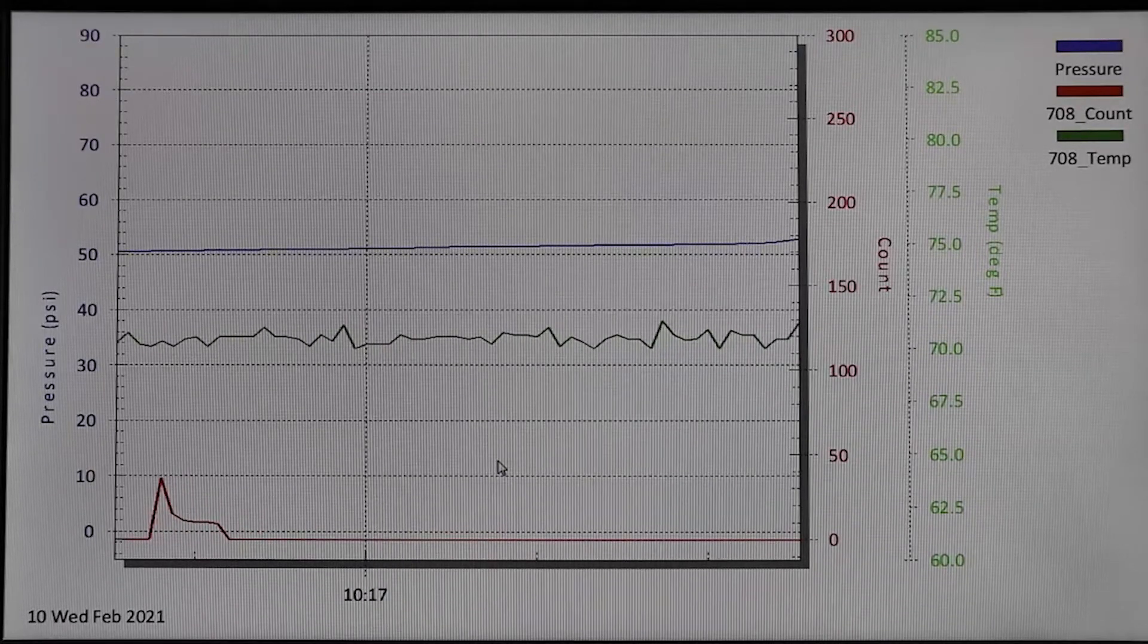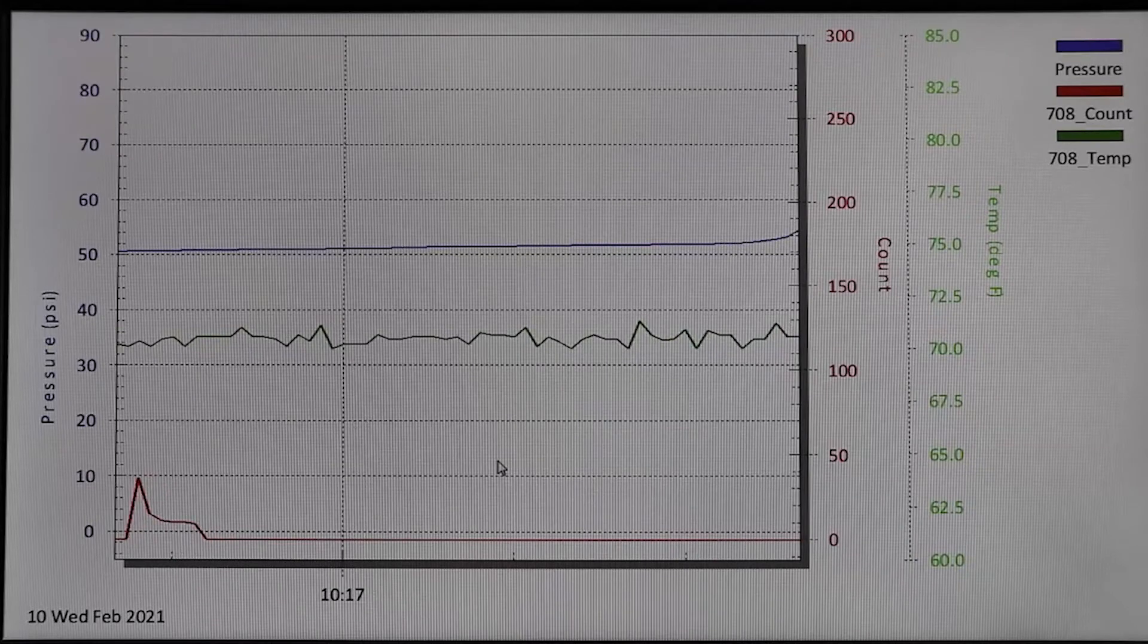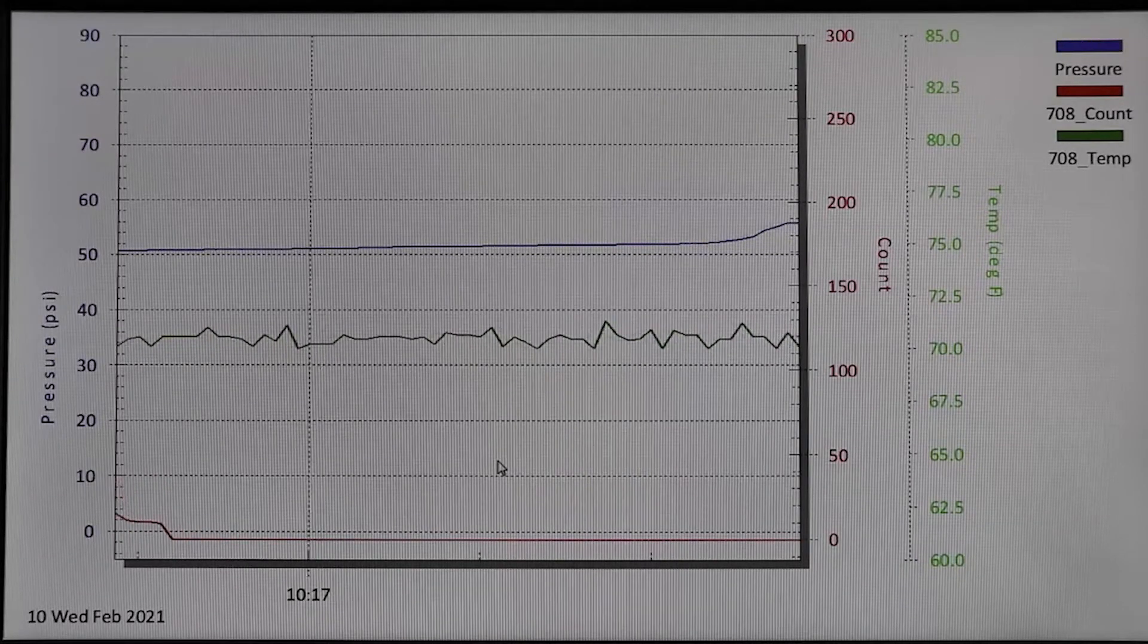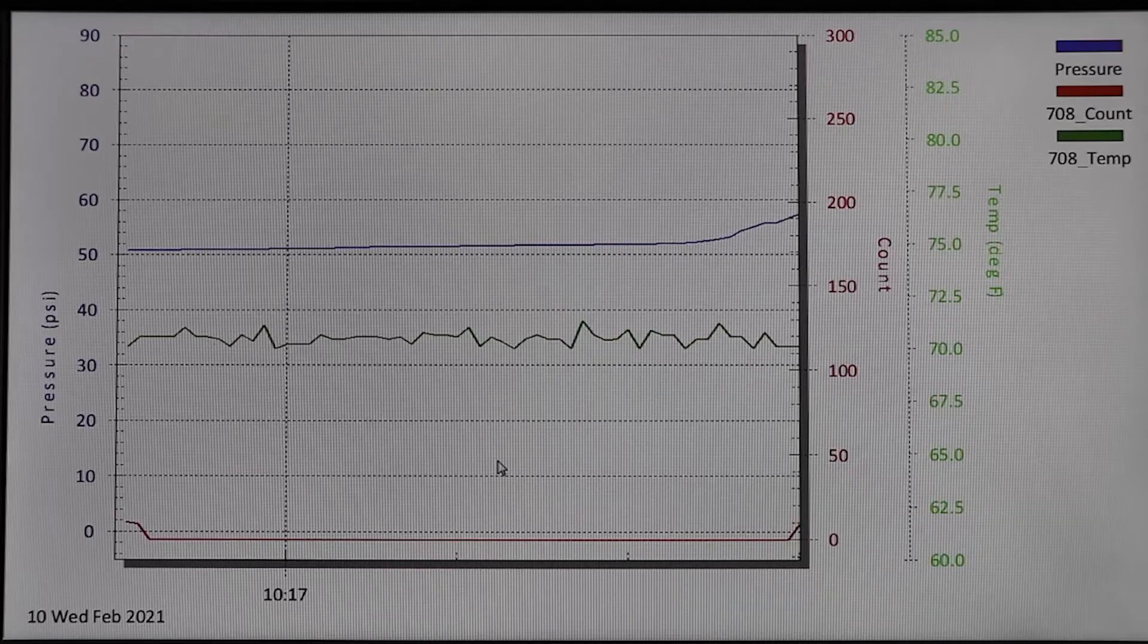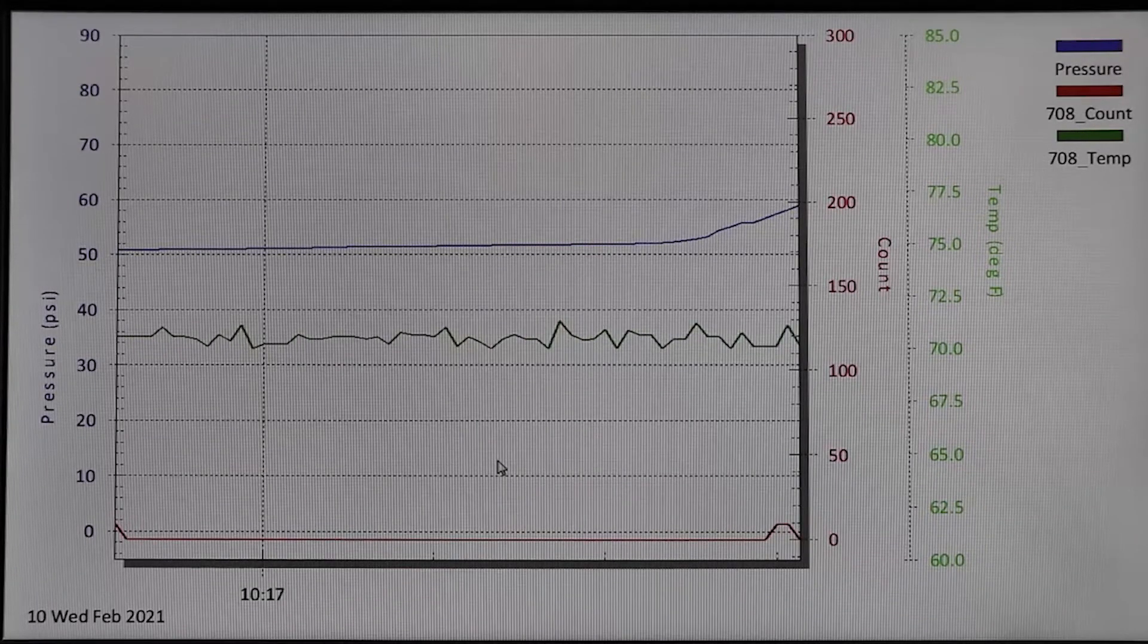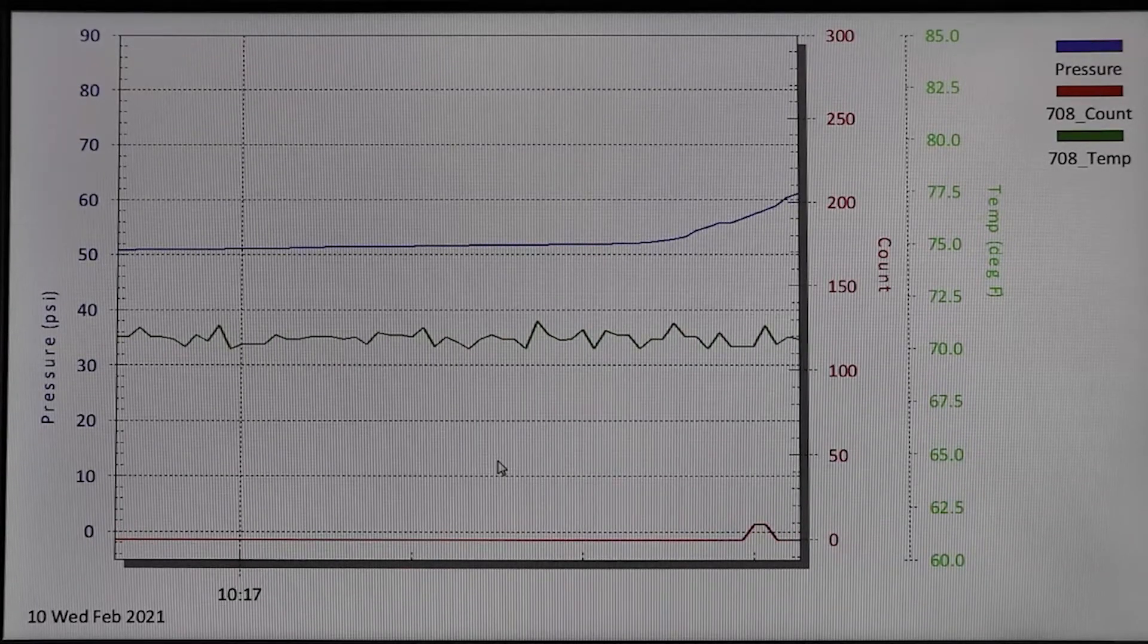On the vertical axis you will see the system pressure referenced by a blue line, the temperature referenced by a green line, and the transmitter's acoustic count indicated in red. The horizontal axis represents time elapsed.